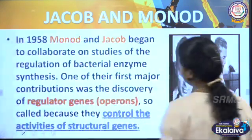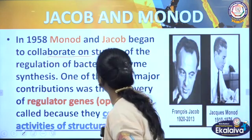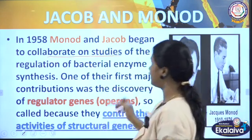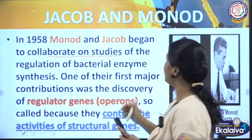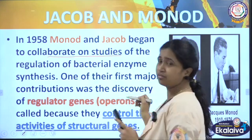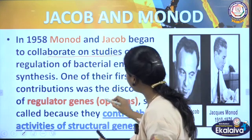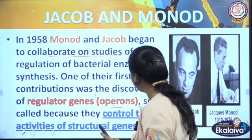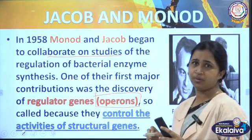Jakob and Monod collaboratively studied about the regulation of the gene — specifically bacterial genes. Here we are going to see prokaryotes. The system they described is called the operon system.